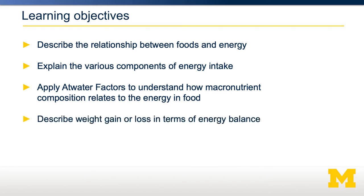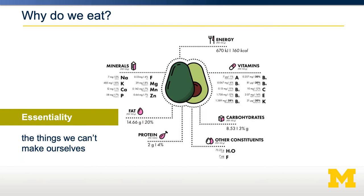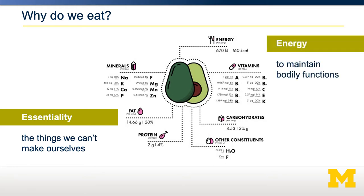Finally, we're going to describe the difference between weight gain and weight loss and relate those to the concept of energy balance. So there are two main reasons why we have to eat. One is to provide our bodies with the essential nutrients — the things we can't make ourselves: vitamins, minerals, essential amino acids, and essential fats. But the second role is to provide energy, generally in the form of macronutrients.